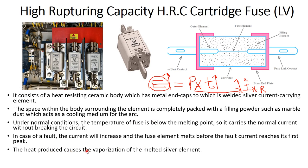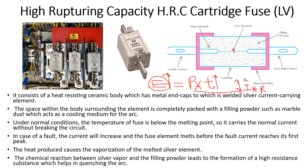The heat produced causes vaporization of the melted silver fuse element. The silver vapor reacts chemically with the filling powder such as marble dust, and this reaction produces a very high resistance substance which helps in quenching or extinguishing the arc. That is the key benefit of the powder inside the HRC cartridge fuse.